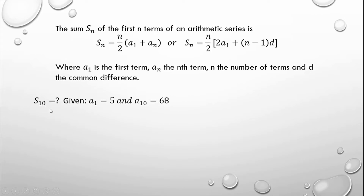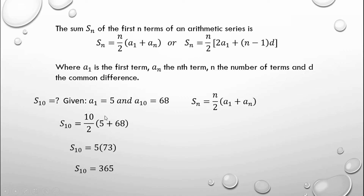S sub 10, the sum of the first 10 terms, is unknown. The given are a sub 1 and a sub 10, so we use the formula S sub n equals n over 2 times a sub 1 plus a sub n. Substituting: n is 10, so 10 divided by 2 times 5 plus 68. That gives 5 times 73, and the answer is 365. It is letter C.